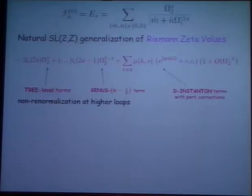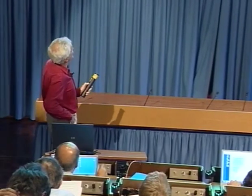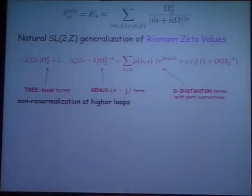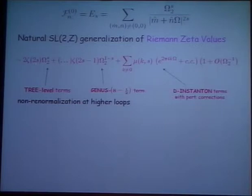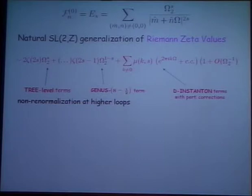Mathematically, this is of interest. These Eisenstein series are ancient history mathematically, but they are of interest partly because they are modular extensions of the Riemann zeta values. If you expand this in what we would call the coupling constant — the inverse of omega_2 — then the leading term is a zeta function. The whole series has one power, a leading power which we would call tree level, and then another power which I will later identify with a genus-one loop term in string theory. Omega_2, remember, is the inverse of the string coupling. So this is a power series in string coupling with only two powers — a sort of non-renormalization. There are no powers beyond the genus one-half term, but there are instanton terms which we would identify with D-instantons in string theory.